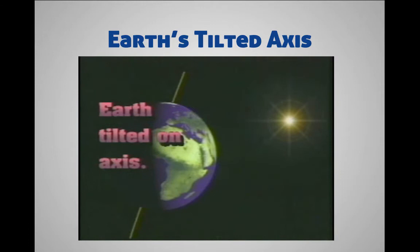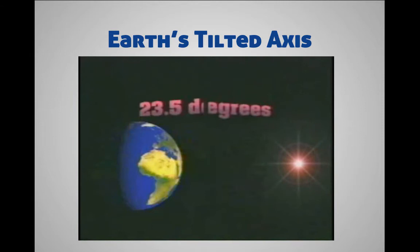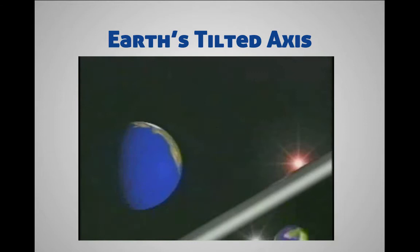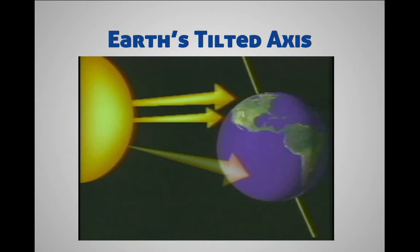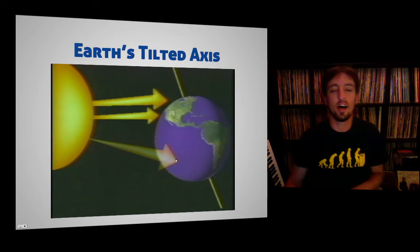Remember, the axis is an imaginary line that runs through the north and south poles of the planet. The Earth spins around on its axis, and our axis is tilted 23.5 degrees. It is always tilted in the same direction, so as it goes around the Sun there are times when the upper half of the Earth is tilted towards the Sun and other times when it is tilted away. This tilt affects the way the rays of sunlight strike the Earth. When the planet is tilted towards the Sun, the rays are more vertical and therefore strike the surface more directly. If it's tilted away from the Sun, it gets less direct sunlight and therefore colder weather.